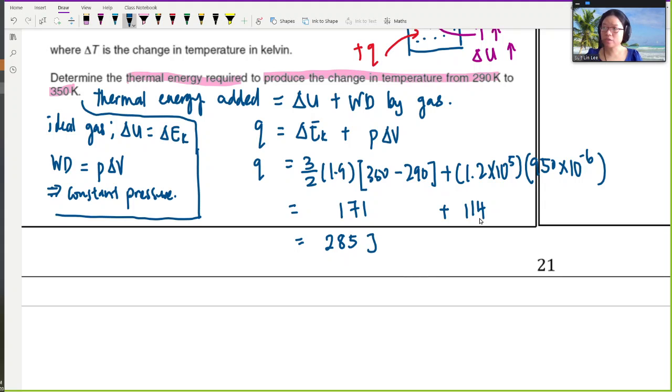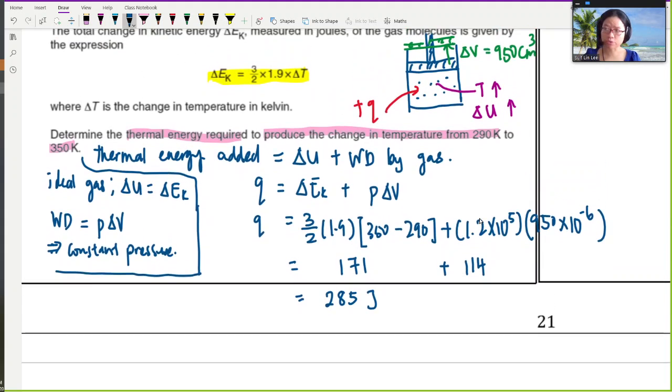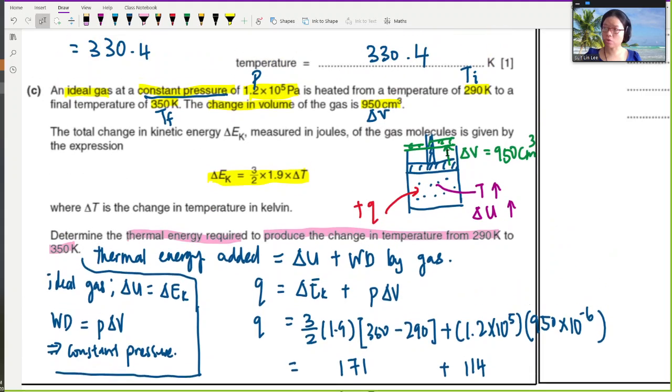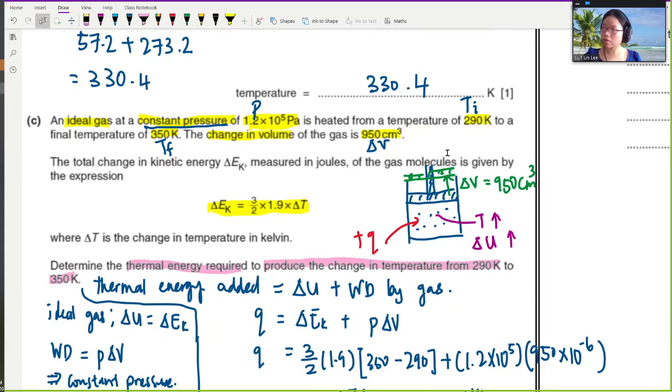Okay. So the sign convention here is pretty straightforward because you add heat. So this is positive. Temperature increase. This is positive. Internal energy is positive. Okay. Temperature increase. And your work done is by the gas. The gas is expanding. Okay. So that's all.